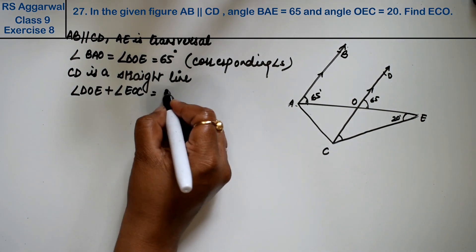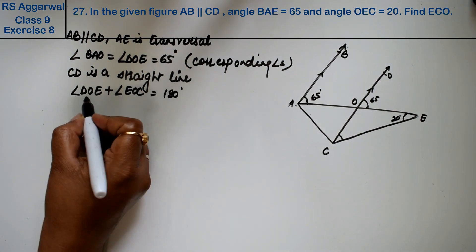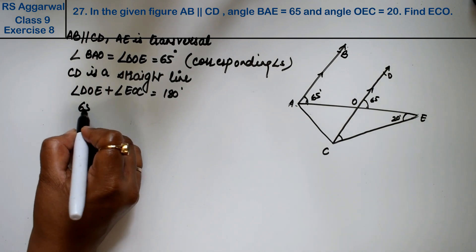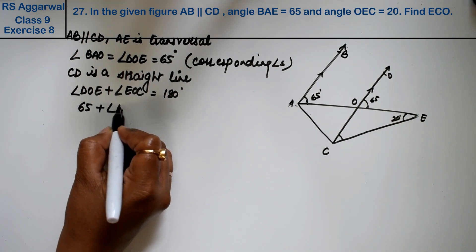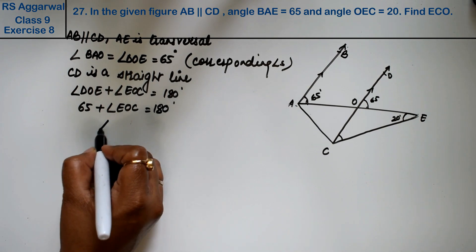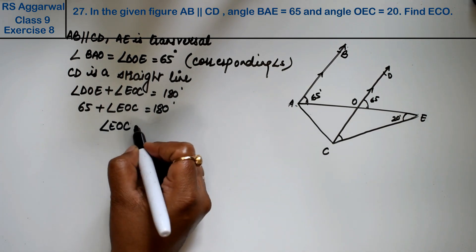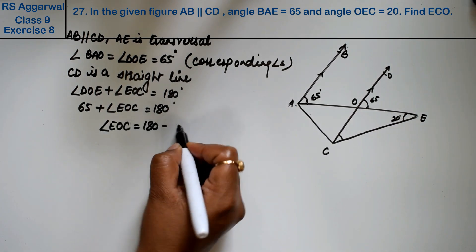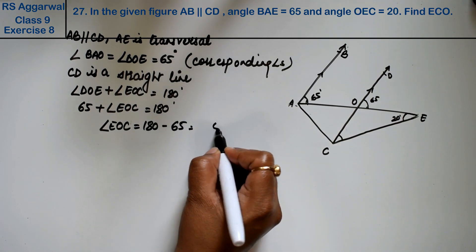DOE we found to be 65 and we need to find EOC, which is 180 degrees. So angle EOC is 180 minus 65, that is 10 minus 5 gives 5, so 115 degrees.